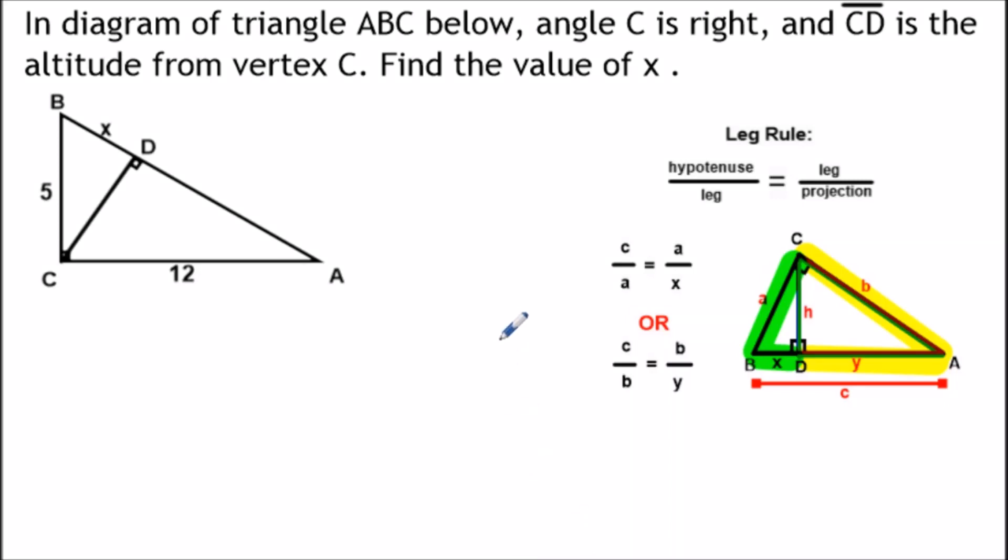In this video we want to see how to use the leg rule to find the length of a missing segment in a right triangle. We have triangle ABC below and angle C is a right angle and CD is the altitude from vertex C and we want to find the value of X, which is basically just the length of line segment BD.